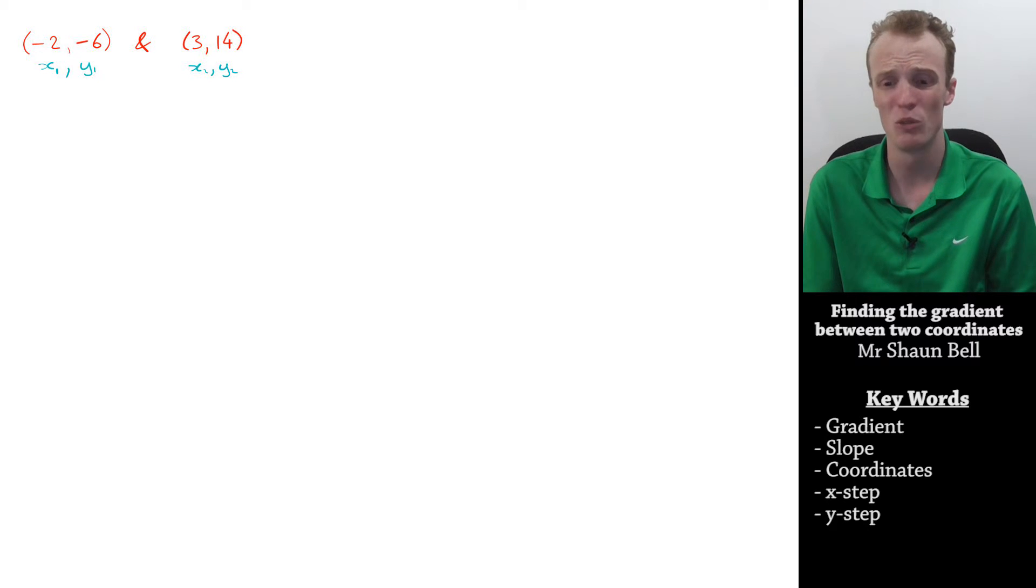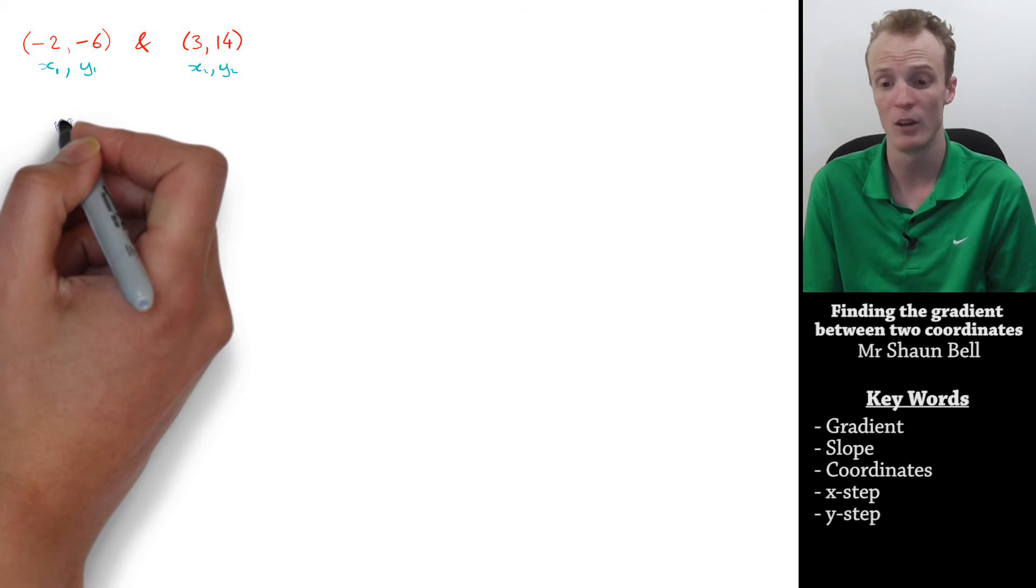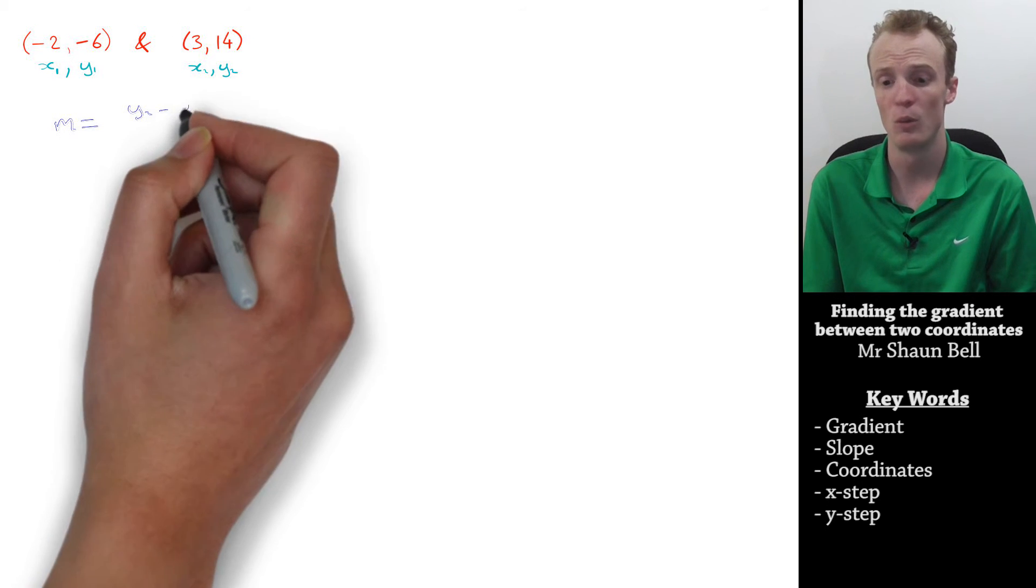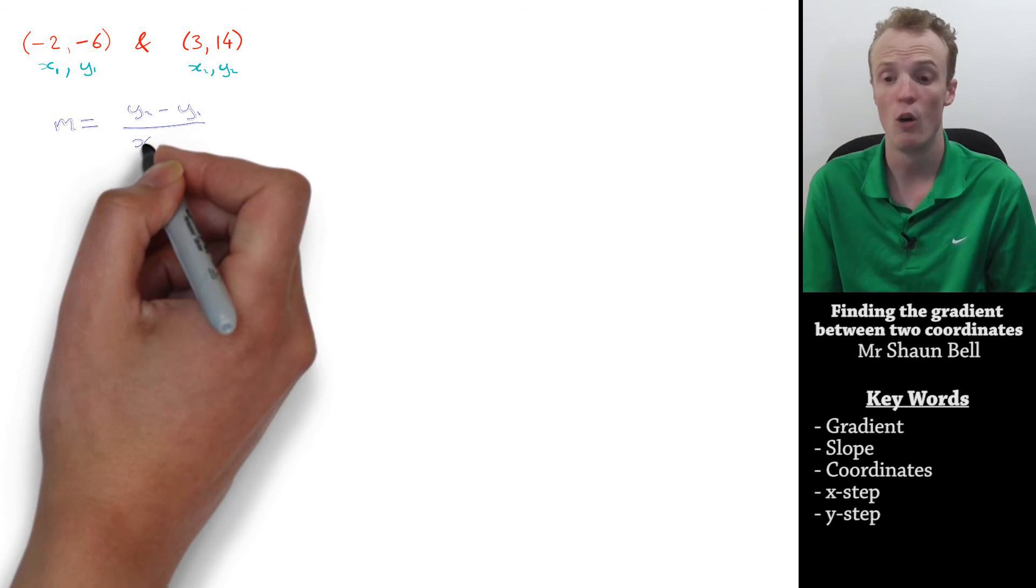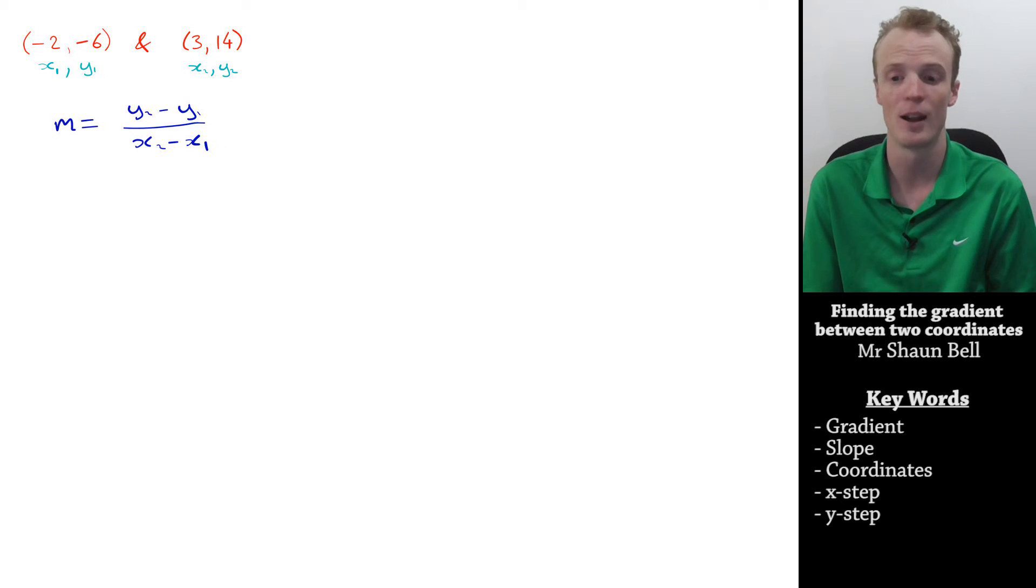Then, write ourselves our shortcut rule that we've just found, which is the gradient, or m, is equal to y2 subtract y1, all divided by x2 subtract x1.